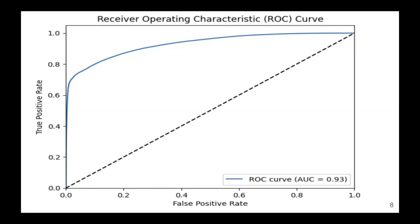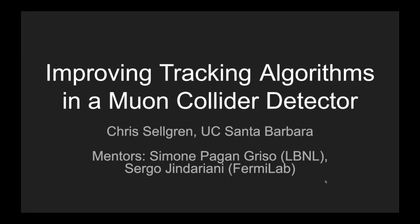Okay. Thank you for the presentation. Up next is Chris. Okay. Good morning, everybody. Morning for me, because I'm in California. My name is Chris Selgren. I am an undergraduate physics student at UC Santa Barbara. And this summer, I'm working on a project entitled Improving Tracking Algorithms in a Muon Collider Detector, under the advisement of Simone Pagan Grisso of Lawrence Berkeley National Laboratory, and Sergo Gendiariani from Fermilab.